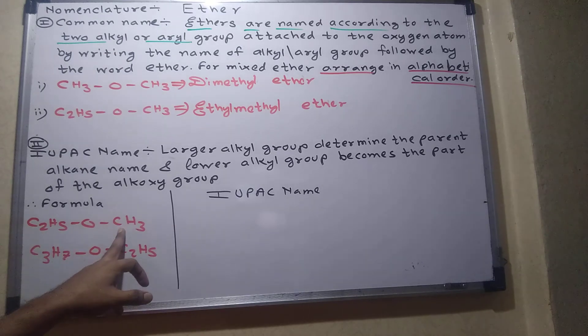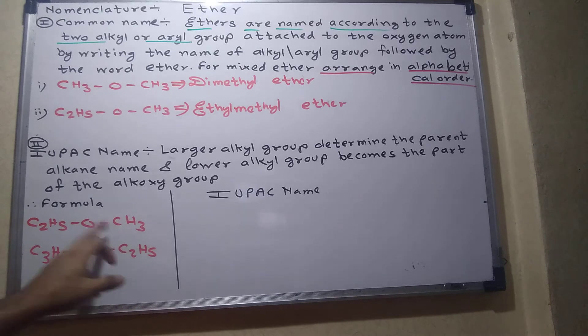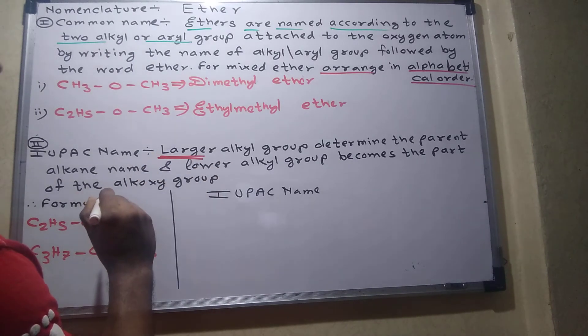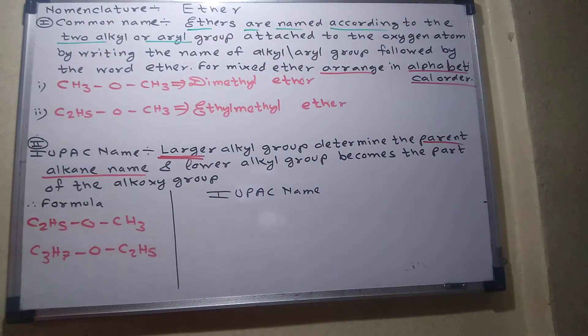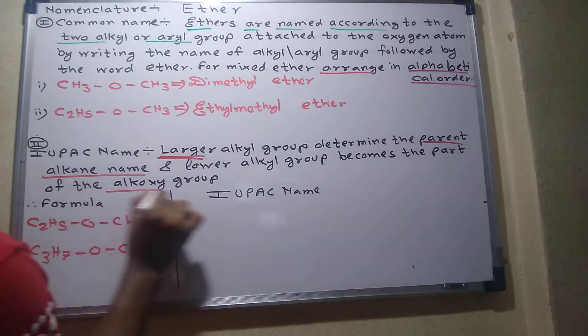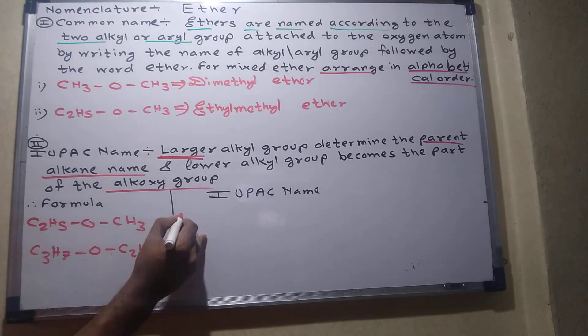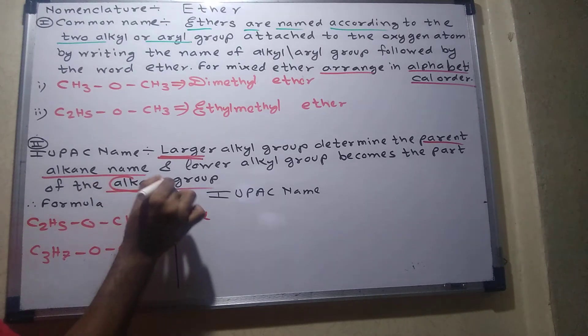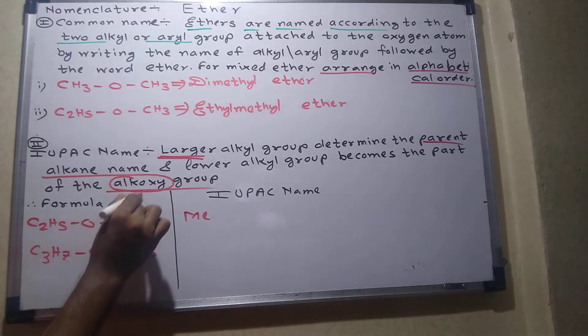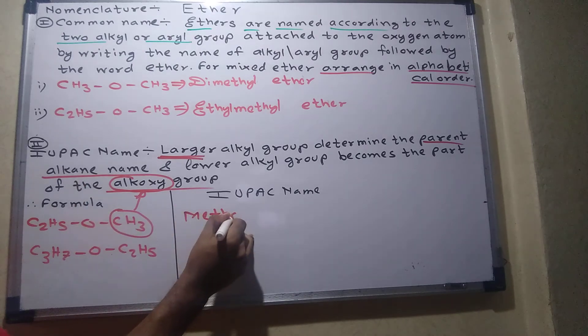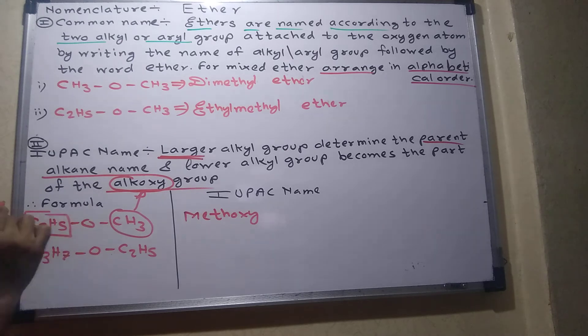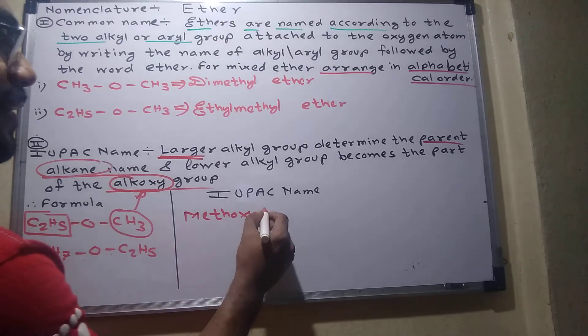The larger alkyl group will become the parent alkane. The lower alkyl group will become the alkoxy group. For example, the small one is methyl, so it's called methoxy - that will be the alkoxy group. And the big one is alkane, which is ethane. So it's methoxyethane.